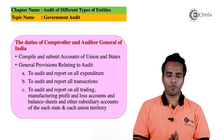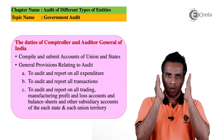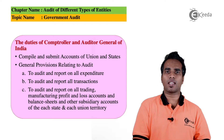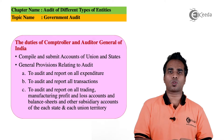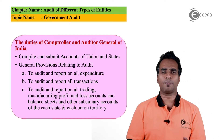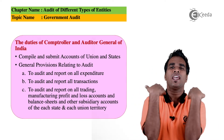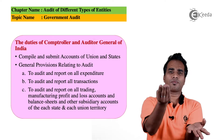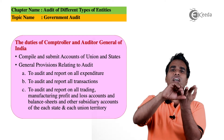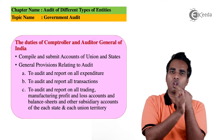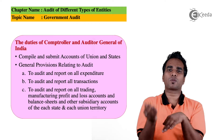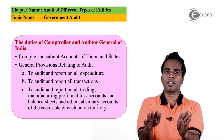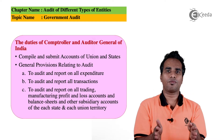Further duties of CAG include: audit of government grants and loans; audit of receipts of Union and State governments; audit of stores and stock; audit of government companies. In summary, CAG's duties cover Union and State accounts, auditing all income, all transactions, all expenses, receipt and expenditure, government grants and donations, government loans, stock and stores, and government companies.